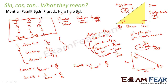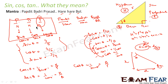So what we have learned: sin theta, cos theta, tan theta, cosec theta, sec theta, and cot theta. The mantra Pandit Badri Prashad Hari Hari Bool helps us write sin, cos, tan. For sin theta → P/H; cos theta → B/H; tan theta → P/B. And cosec theta → H/P; sec theta → H/B; cot theta → B/P.